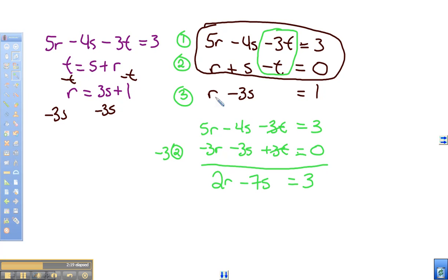So we'll multiply negative 2 times our equation 3. And that will give us negative 2R plus 6S is going to equal negative 2. And now I can add those two equations and we'll see what happens here.